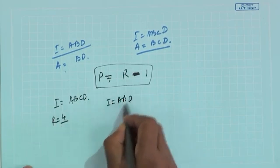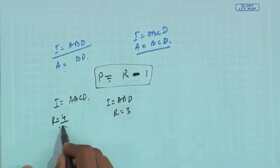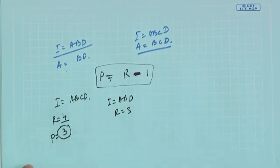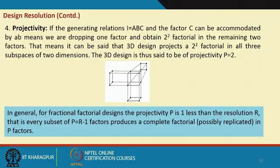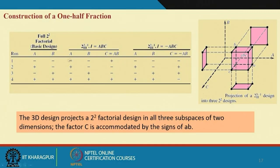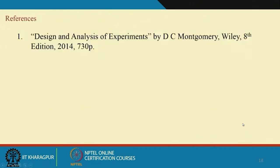If your defining relation is ABCD, resolution r = 4, so projectivity p = 3 — meaning in 3 dimensions you get full information. If the defining relation is ABD, r = 3, projectivity = 2 — you get full information only in 2 dimensions. Resolution has a very important effect on lower-order analysis. In this 2^3 design, if you do a half fraction, at least in the AB, AC, or BC level you will have full information provided the resolution is 3. The lecture is taken from Montgomery's book Design and Analysis of Experiments.